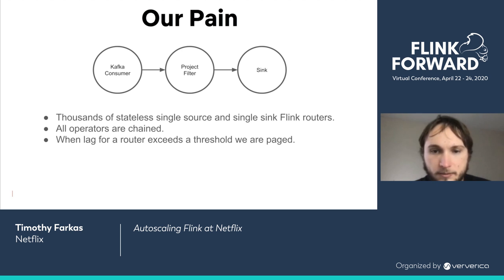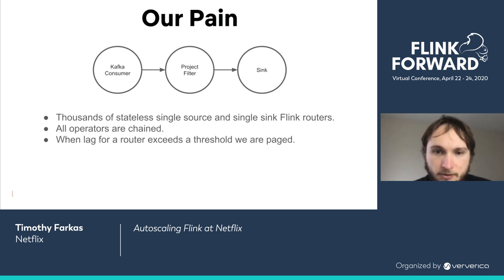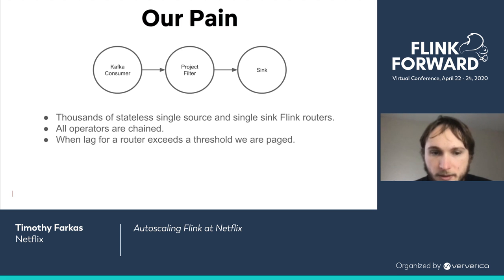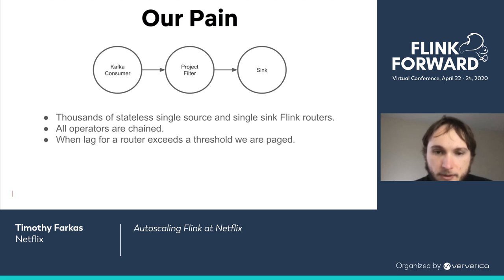So what was our pain point? The streaming processing team here manages thousands of simple Flink jobs for customers throughout Netflix. We call these simple Flink jobs routers, and they just consume from a single Kafka topic, potentially do a projection or filter operation, and then write the results to a sink. All of these jobs are stateless and don't do any shuffles — all the operators are chained together in a single subtask.